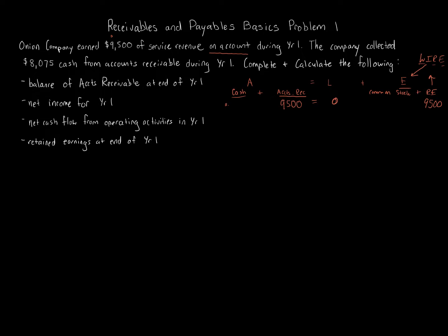Transaction B: the company collected $8,075 cash from accounts receivable during year 1. Cash goes up by $8,075, and accounts receivable goes down by $8,075. There's no change on the liabilities or equity side — both are zero. Those are the only two transactions. Summing everything up, the ending balance of cash is $8,075, and the ending balance in accounts receivable is $1,425.